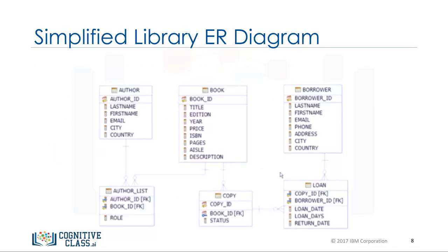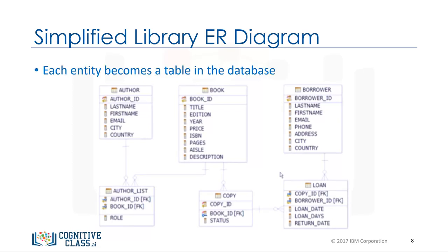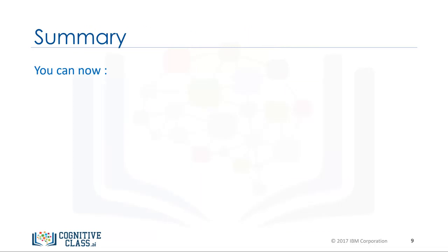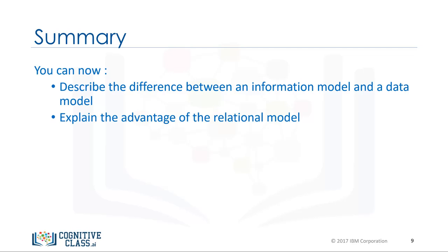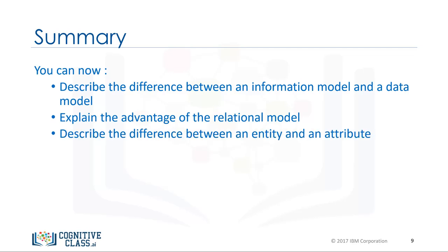In the simplified library database, we progress through the process of identifying entities such as borrowers who take books out on loan, various copies of each book, and copies of books out on loan. This is the final ER diagram. Each entity becomes a table in the database. You can now describe the difference between an information model and a data model, explain the advantage of the relational model, and describe the difference between an entity and an attribute.